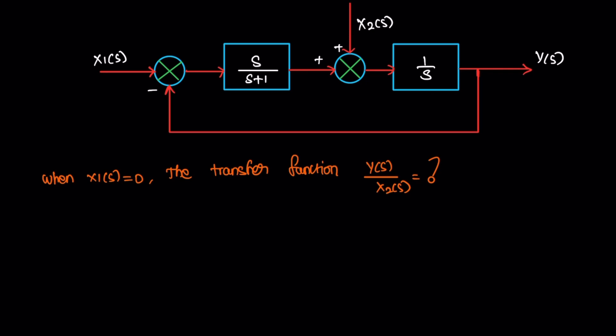A block diagram is given. When x1 is equal to 0, then find the transfer function Y divided by X2. For this question, there are two inputs and one output. The first input is equal to 0, so we just cut this input. So there is actually no input here.